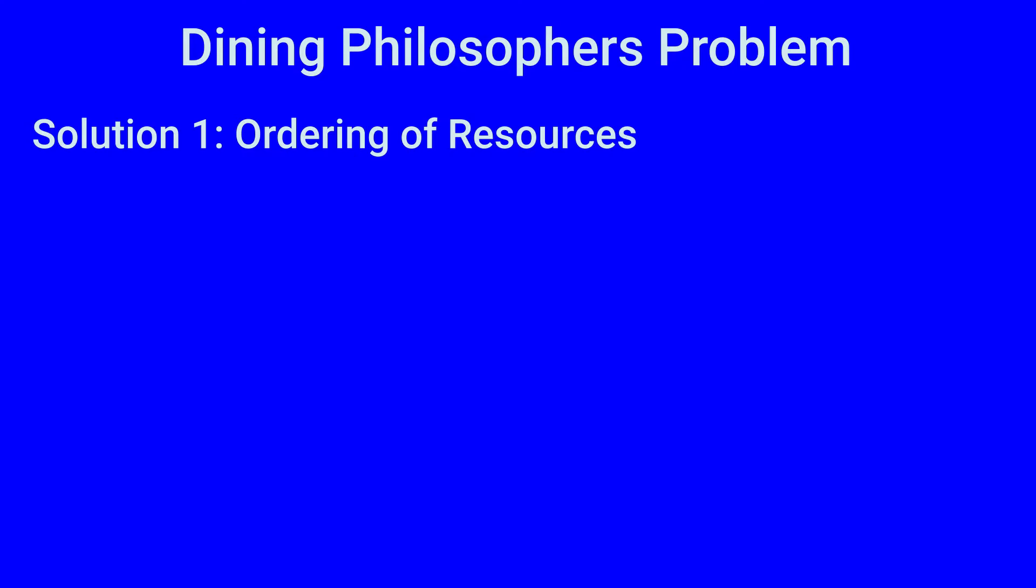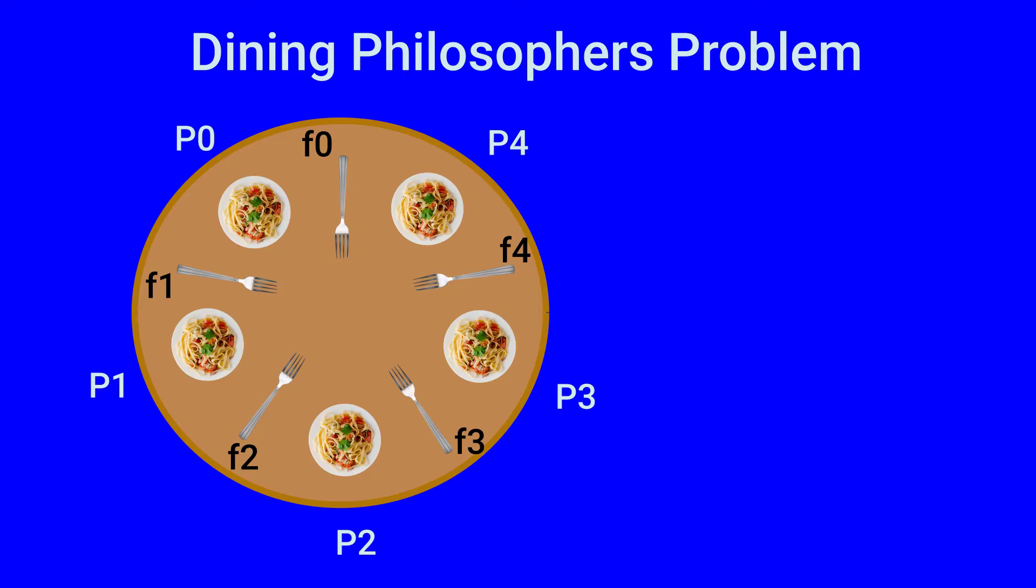The first solution involves ordering of resources. The forks are numbered f0, f1, f2, f3, and f4 and placed counterclockwise starting with the left of philosopher p0. A philosopher must pick up the lower numbered fork kept near his or her spaghetti plates first and then the other fork.